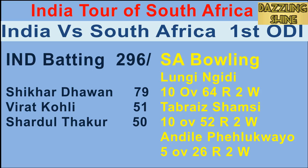Second ball of the 25th over, Shamsi to Kohli — Kohli plays a wristy shot nicely towards the fine leg and square leg boundary for four runs.